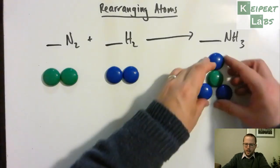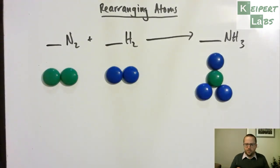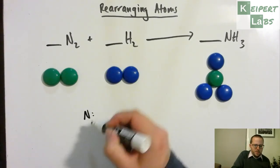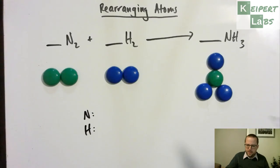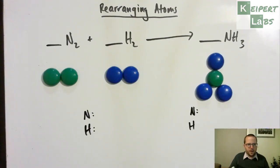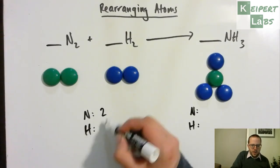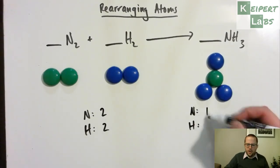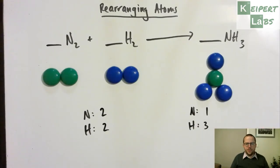And then looking at my formula that I've got over here, I know that I've got to have one green surrounded by three blues. I'm going to keep track of my nitrogens and hydrogens. So far I've got two of each. I've got one nitrogen and three hydrogens. So none of my numbers match so far.